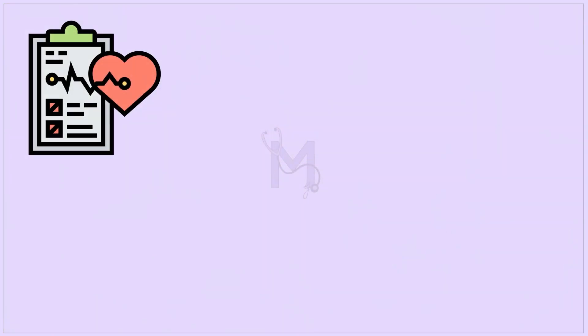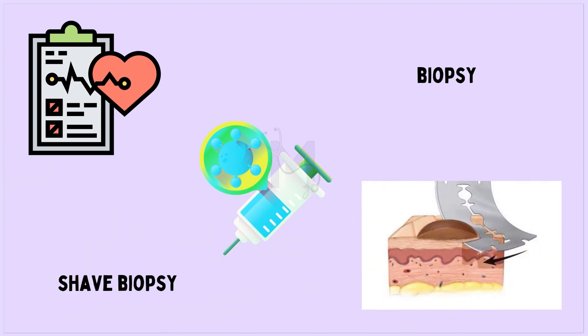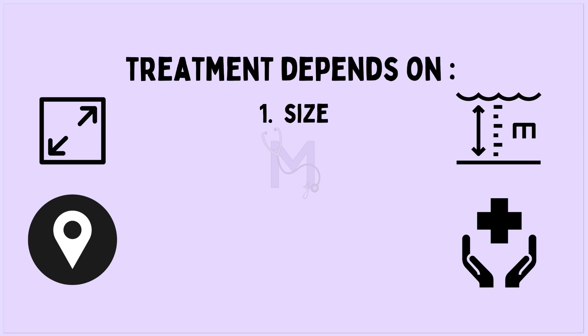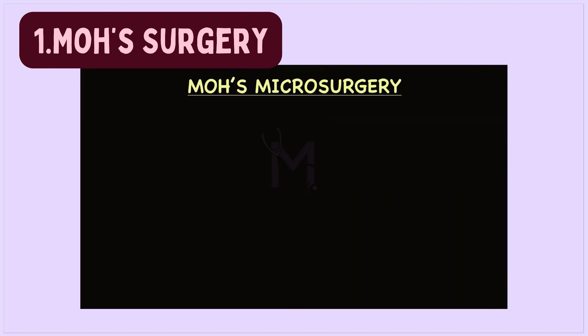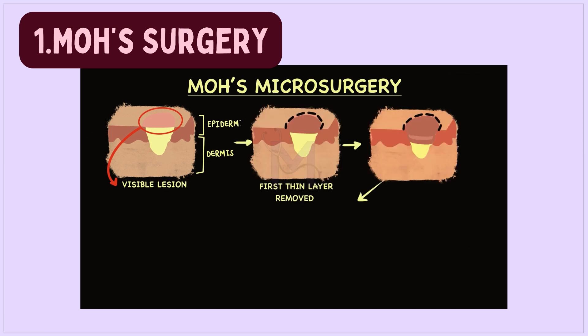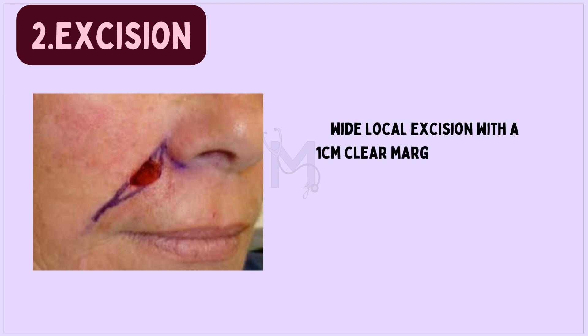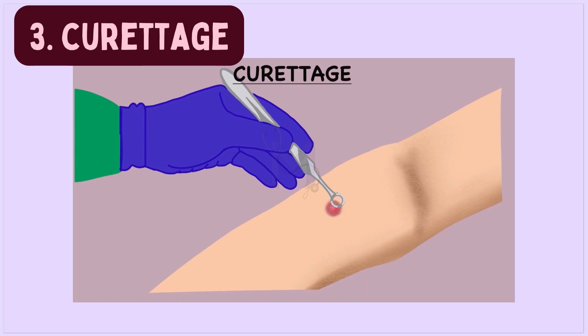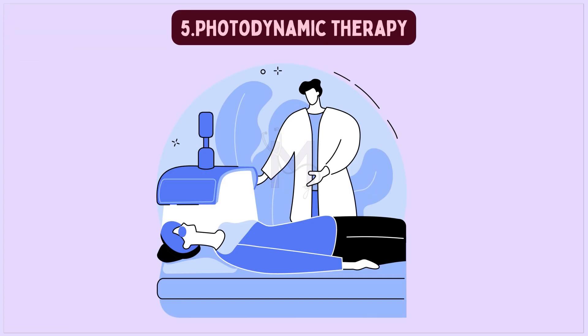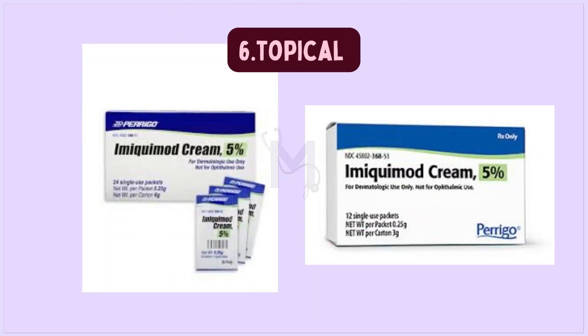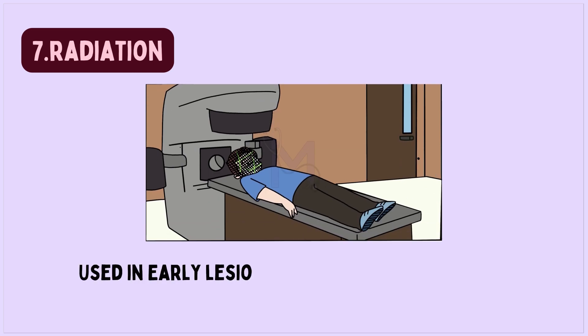When diagnosed and treated early, the prognosis is excellent. Diagnosis is made by biopsy of the affected area, most commonly a shave biopsy. Treatment depends on the size, depth, location of the lesion, and the patient's overall health. Options include Mohs surgery (removal of successive skin layers examined microscopically), wide local excision with a one-centimeter clear margin, curettage, cryosurgery, photodynamic therapy, topical application of imiquimod cream, and radiation for early lesions or when surgery is not possible.